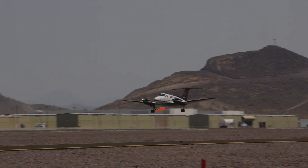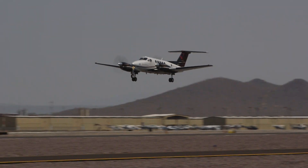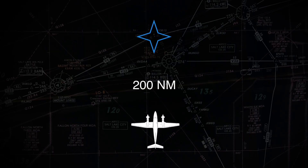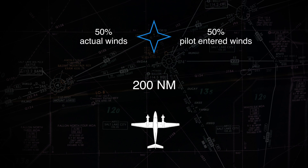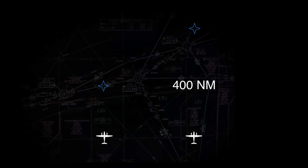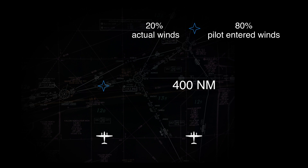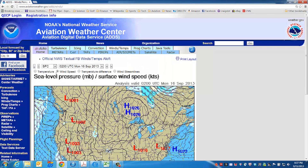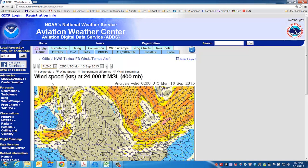Once airborne, the winds and temperatures being used for performance calculations is a blend of sensed and entered data. During flight, actual sensed winds and temperatures are used for the present position of the aircraft. However, for waypoints 200 miles ahead, the wind data is a blend of 50% actual sensed winds and 50% pilot-entered winds. For more accurate performance predictions, enter the forecast winds and temperatures aloft for several waypoints along your route of flight.